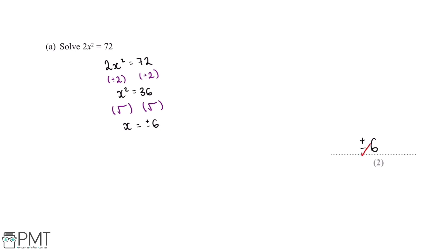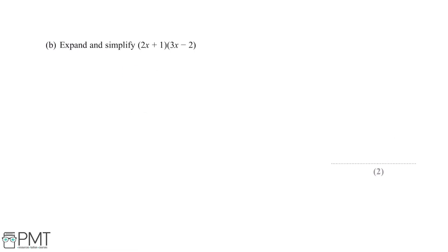Our final answer is plus or minus 6. We'll get one mark for the plus or minus and one mark for the six. Next: expand and simplify (2x + 1) multiplied by (3x − 2). To do this question it can sometimes be helpful to draw arrows showing which terms we need to multiply together. We can first start with 2x multiplied by 3x: 2 multiplied by 3 is 6, and x multiplied by x gives us x squared.